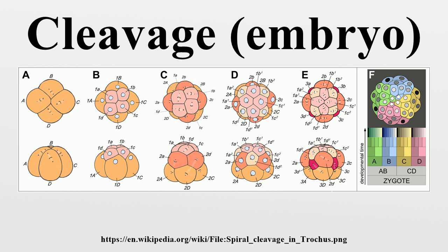Bilateral: The first cleavage results in bisection of the zygote into left and right halves. The following cleavage planes are centered on this axis, resulting in the two halves being mirror images of one another. In bilateral holoblastic cleavage, the divisions of the blastomeres are complete and separate, compared with bilateral meroblastic cleavage, in which the blastomeres stay partially connected. Radial: Radial cleavage is characteristic of the deuterostomes, which includes some vertebrates and echinoderms, in which the spindle axes are parallel or at right angles to the polar axis of the oocyte.